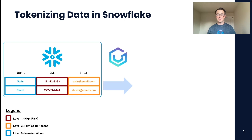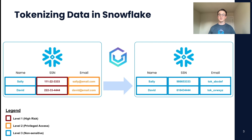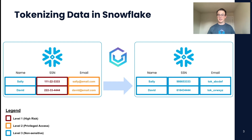Using the VGS native app, we can tokenize all of the different data in this environment. As you can see on the right side, the email column is fully tokenized and there is no reference back to the email address. However, the SSN column is tokenized in a format that will preserve the last four digits, so it still looks like an SSN and still has certain characteristics of an SSN, but it no longer represents that customer.